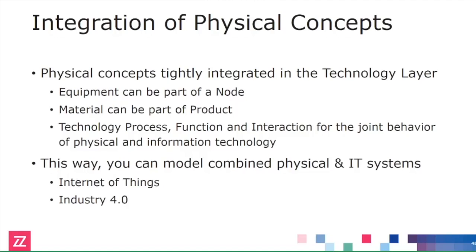You can use this customization mechanism — the same one I used to define the metric concept — to find specific kinds of material and production processes. Then we have the behavior part, but we reuse the behavior of the existing technology layer. This helps you combine these different systems — physical and IT systems — into one single thing. It can be part of one node that has both kinds of technology, and we'll have an example of that later.